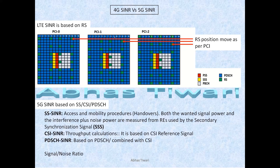The basic difference between LTE SINR and 5G SINR is that in 5G we have three different kinds of SINRs. The calculation is based on three methods in 5G, and every method is unique with no correlation between them. Based on your UE capabilities, you will have different kinds of SINR, and your network must support that particular reporting. Now let's understand what 4G SINR is based on.